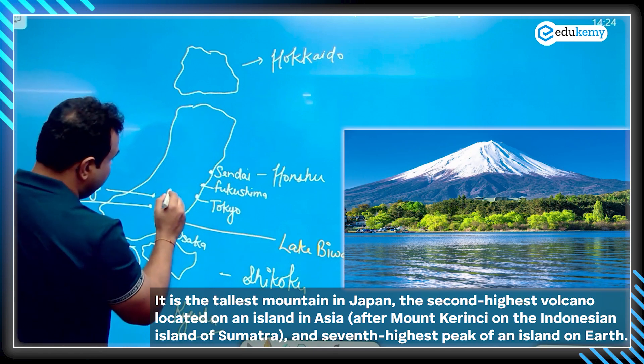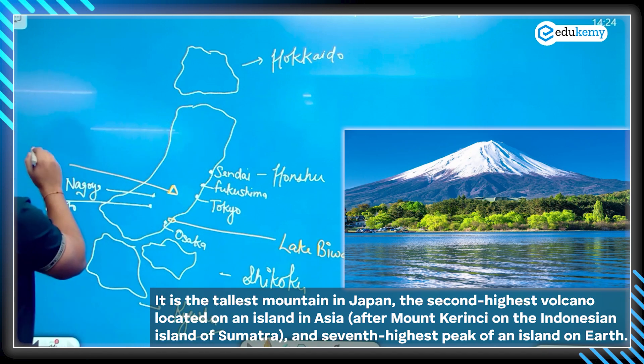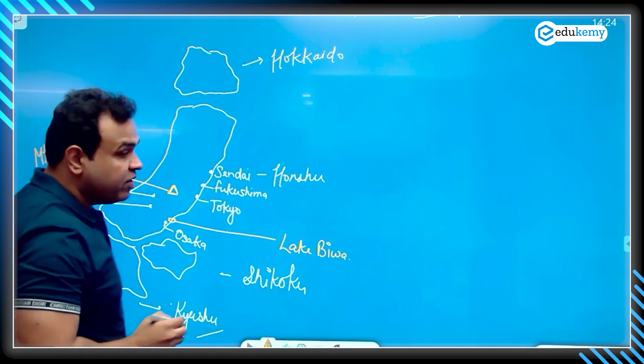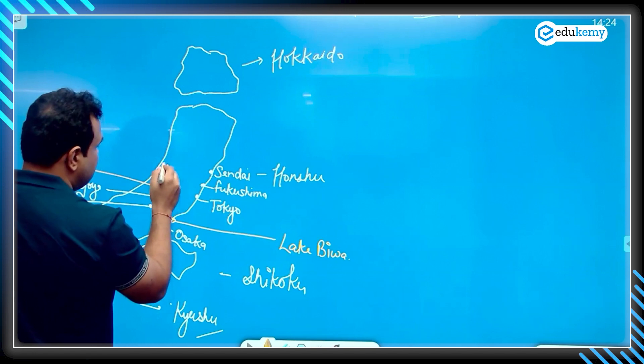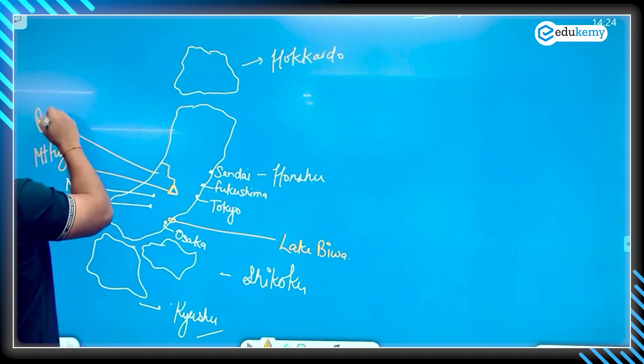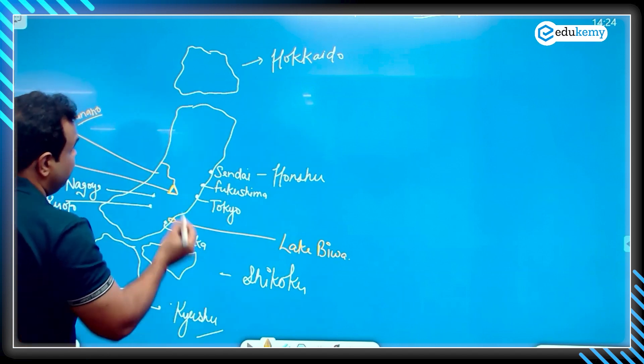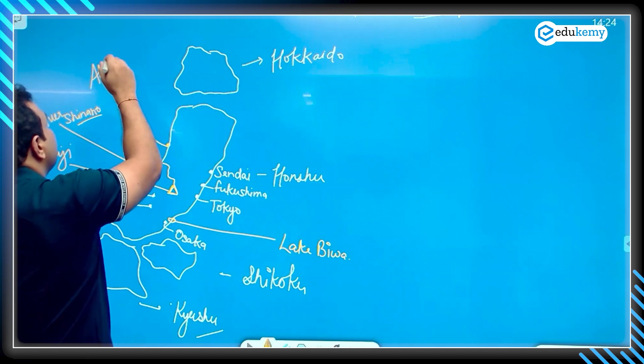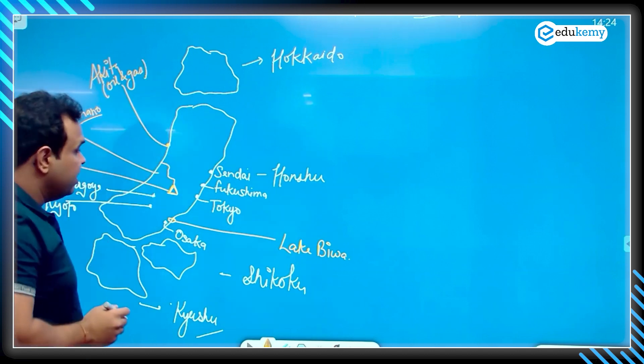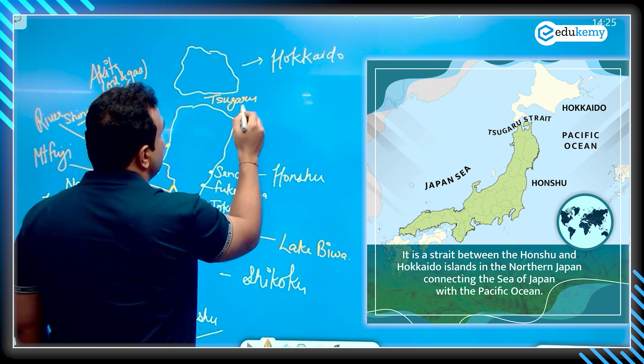We have Mount Fuji here. This is Mount Fuji, and one of the rivers is originating from Mount Fuji, maybe Shinano. This is the river Shinano, one of the rivers in Honshu. We have one place here that is Akita, famous for oil and gas. We have one strait also, Tsugaru strait.